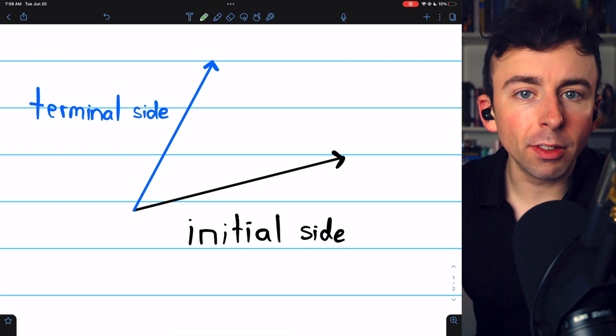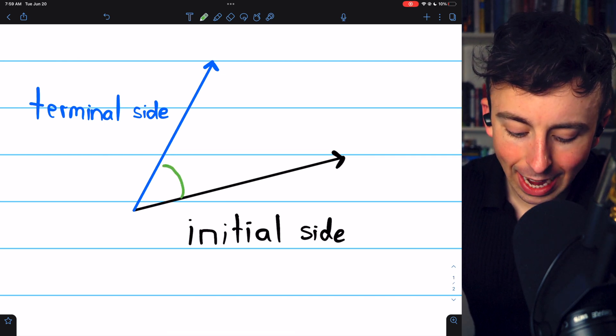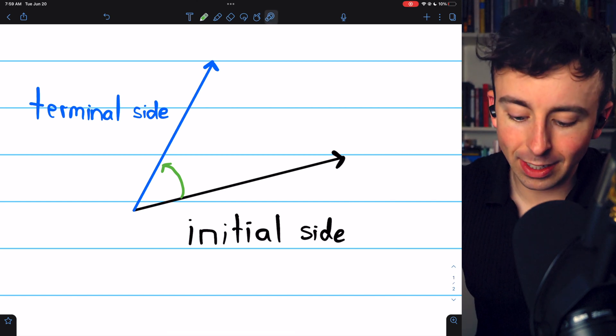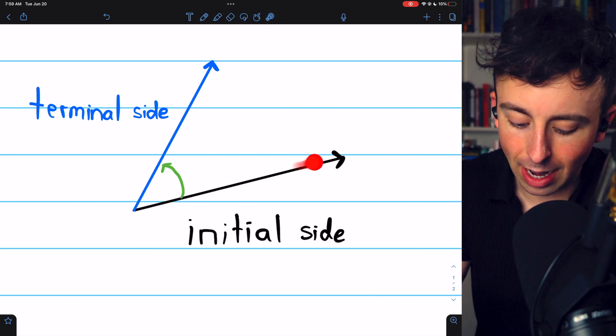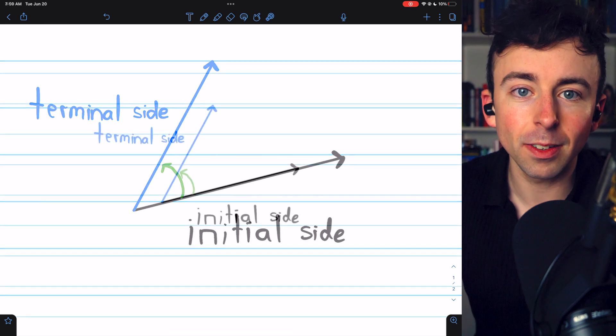And when this information is important, we should draw our angles with a little arrow indicating the direction of the rotation. This makes it clear that this is the initial side of the angle, and this is the terminal side, the side that rotated in this counterclockwise direction.